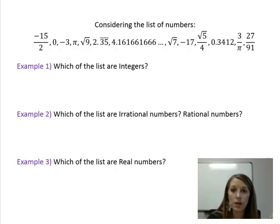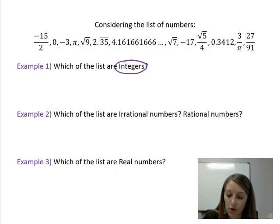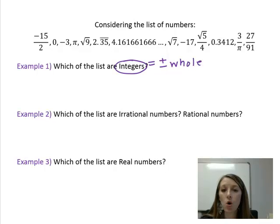Okay, let's start with example one. The first thing I'm going to do is define integers for you once more. Hopefully, if you redefine each of these when you're working through the example, the question makes much more sense to you. Integers are positive and negative whole numbers. So if I can pick out any whole numbers from this list, both positive and negative, then that's going to fit into example one.